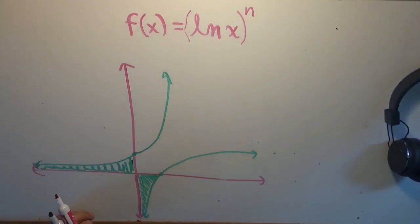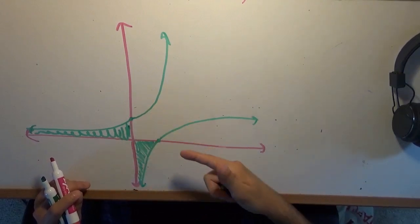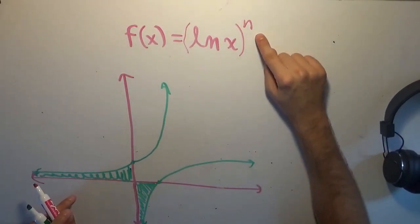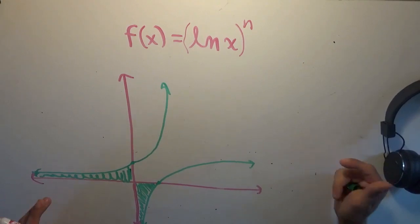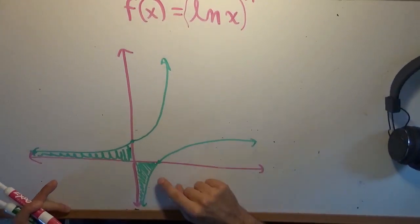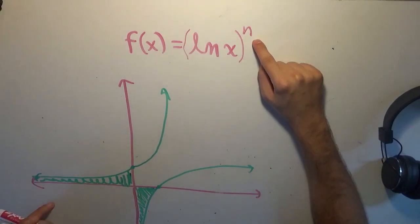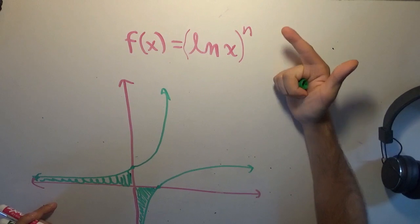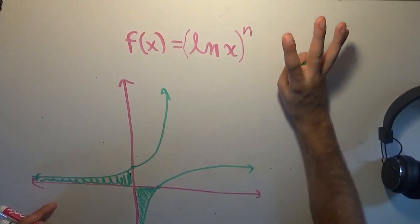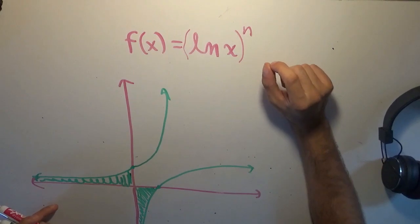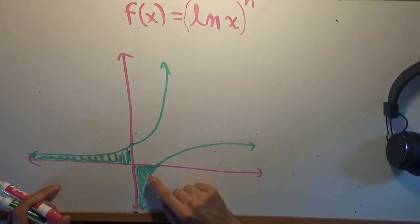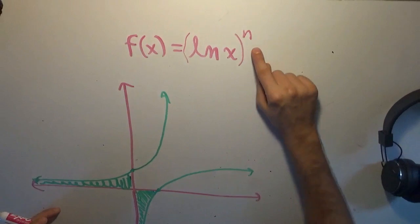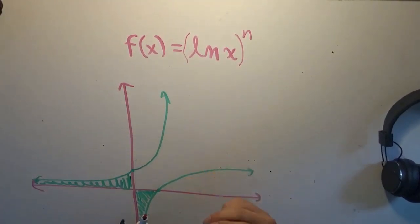Now, if this were the absolute value of the natural logarithm — meaning this part of the curve was actually above the x-axis — then any fractional powers would be just fine with regards to real numbers, because any fractional powers of purely positive numbers will be perfectly real and well-defined. But because this is all negative, any sort of weird fractional powers are going to cause complex numbers to appear. But we're not going to consider the absolute value — we're simply going to take the integral from zero to one of these different powers, because it's very interesting what you end up with, and I did not at all see it coming when I worked it out.